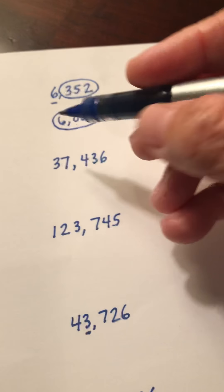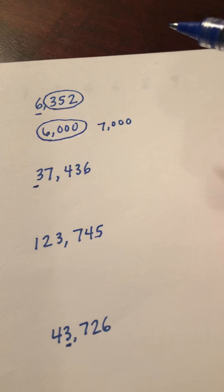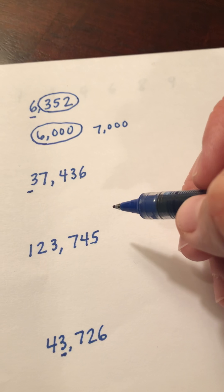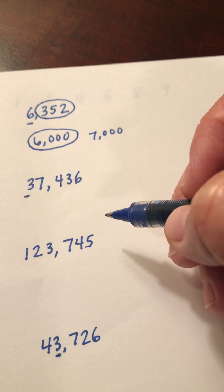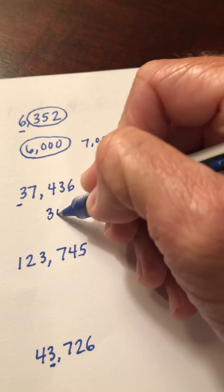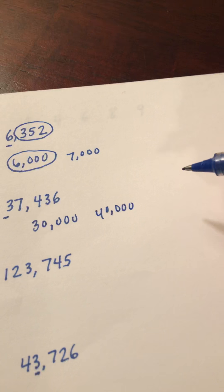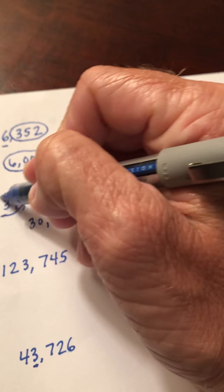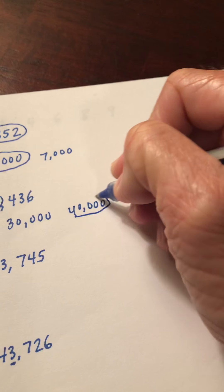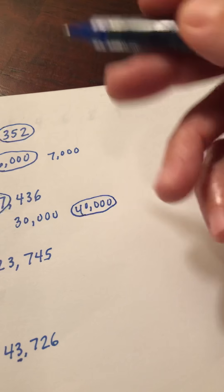Here's a number in the ten thousands: thirty-seven thousand four hundred thirty-six. When rounding to the largest place possible, we think about what ten thousands this is between. Can I count by ten thousands — ten thousand, twenty thousand, thirty thousand, forty thousand, fifty thousand, and so on. So this falls between thirty thousand and forty thousand, with my midpoint being thirty-five thousand. Thirty-seven thousand is above thirty-five thousand and would be closer to forty thousand than thirty thousand, so thirty-seven thousand four hundred thirty-six would round to forty thousand.